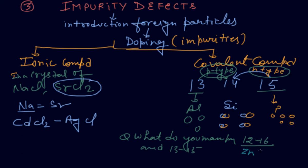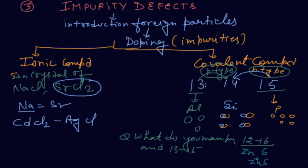From group 16, we can take sulfur, so it becomes zinc sulfide — these are very good semiconductors. Better examples come from combining groups 13 and 15: from group 13 we can take aluminium, and from group 15 we can take phosphorus. Students, please take note of this for the next class as well.